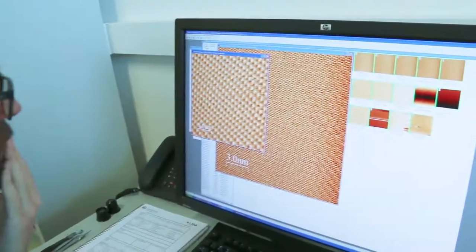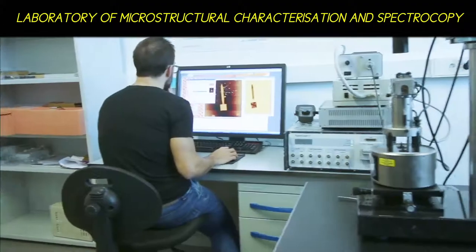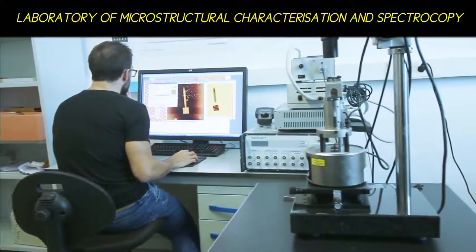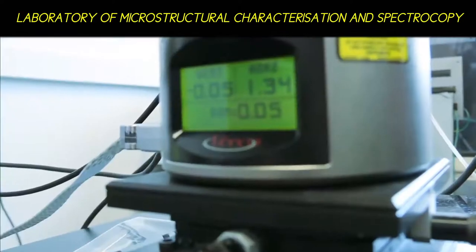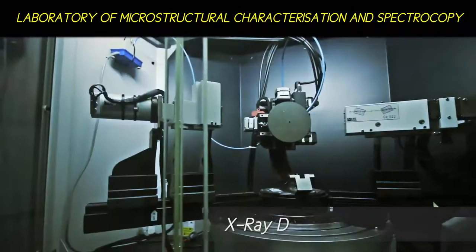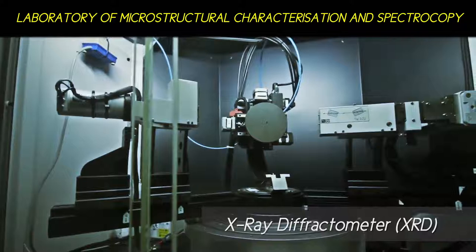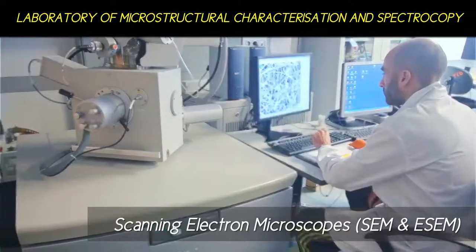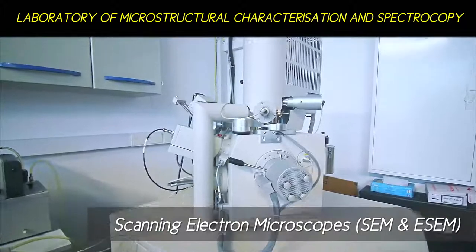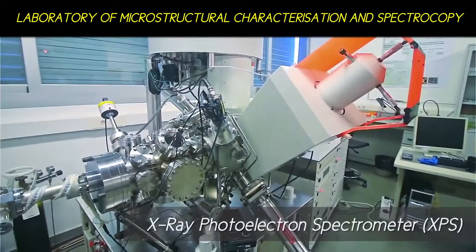Finally, the laboratory of microstructural characterization and spectroscopy. In order to characterize materials of interest, both microstructurally and spectroscopically, the LMA has an X-ray diffractometer, two scanning electron microscopes, and an X-ray photoelectron spectrometer.